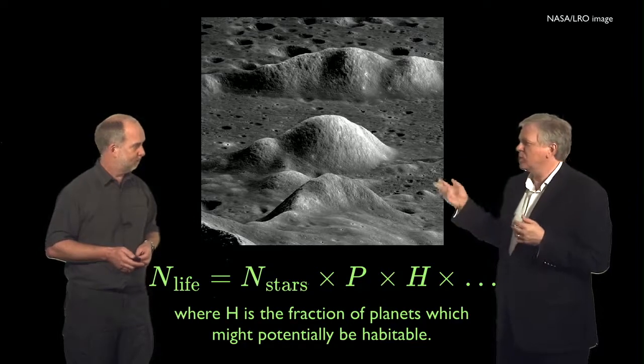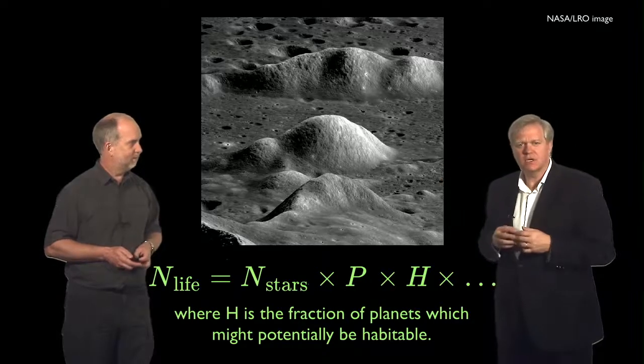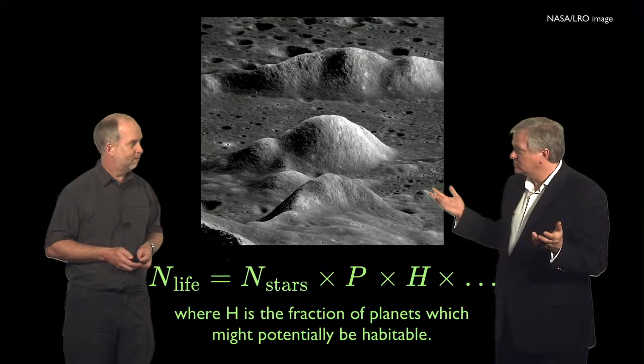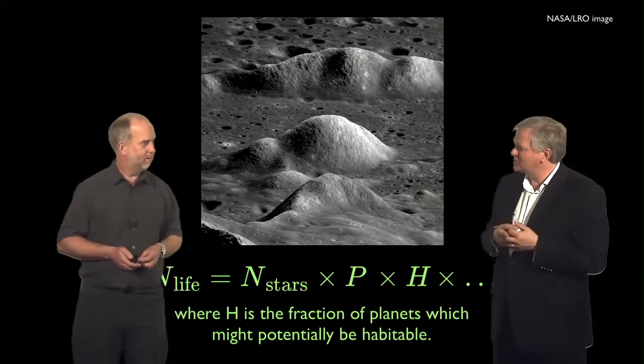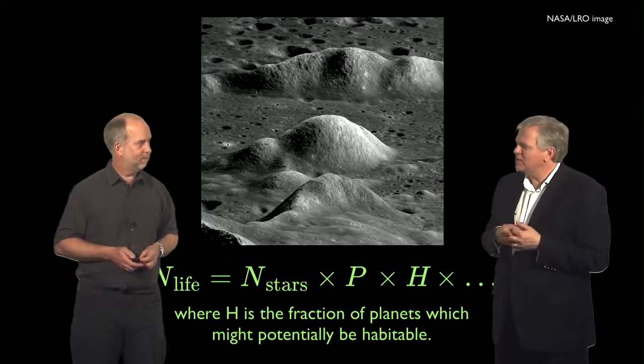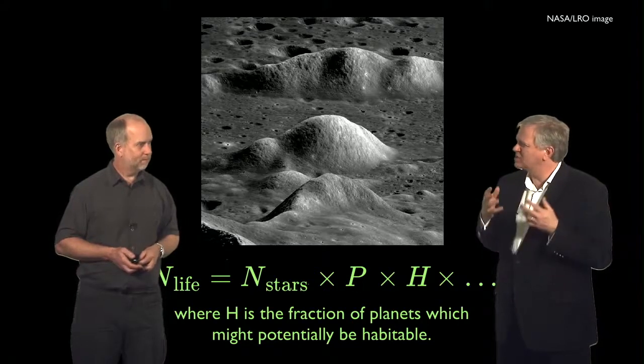So we really need to have a habitable planet for there to be alien life. And so clearly the Moon, well, it's not really a planet, but it counts. The Earth's habitable. Not really clear anything else in the solar system is habitable. Maybe Mars. So maybe we need to have a look at what is going to be a habitable planet.